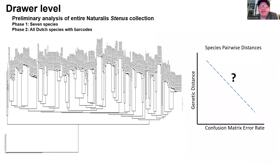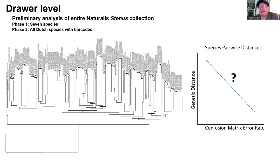For the next phase of this project, we are looking for a relationship between error rate in the confusion matrix and how closely related species are. The prediction is that the AI should be more likely to make an error for closely related than for distantly related species. We will be increasing our data size yet again by another order of magnitude, focusing on all the Dutch Stenus species for which we have DNA barcode data — that's about 60 species. We hope this will help us better understand where machine learning can provide reliable, high-throughput taxonomic determination and where we really need the attention of human specialists.